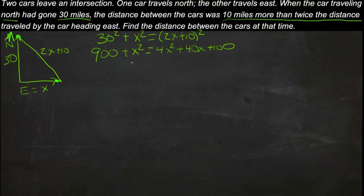Simplify and we'll get 0 equals 3x squared, subtracting this from both sides, plus 40x minus 800, by subtracting.